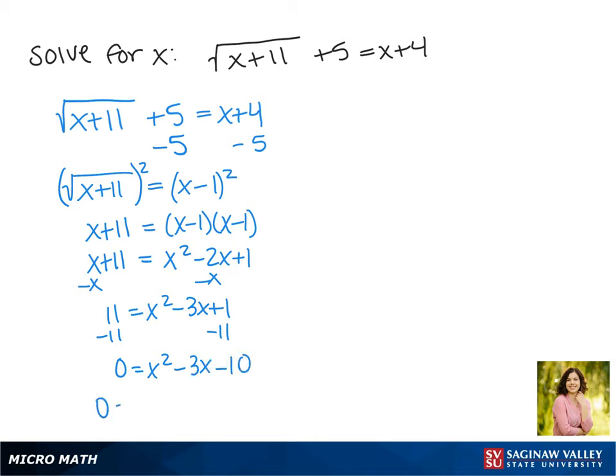The factors of negative 10 that make negative 3 are negative 5 and positive 2, and then we set each of these binomials equal to 0. Solving for x gives us x equals 5 and x equals negative 2.